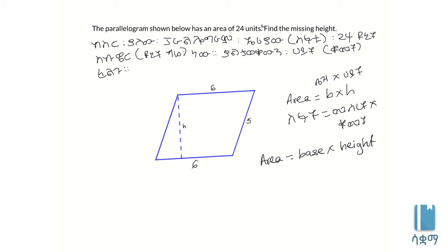Or simply, base times height. We need to find the area using the formula. Since we know the area, we use the formula. The formula gives us what we need to find the missing value.